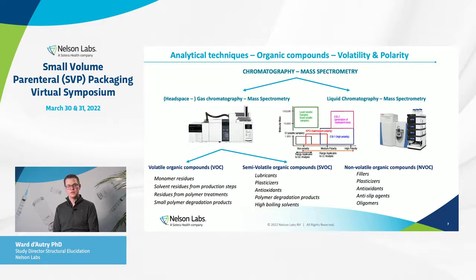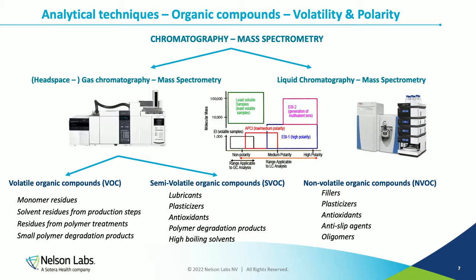For non-volatile organic compounds we use liquid chromatography mass spectrometry (LC-MS). Non-volatile compounds are typically larger or more polar — such as fillers, larger plasticizers, and antioxidants. For LC-MS you can have multiple modes of ionization: APCI covers more semi-polar to non-polar compounds, while ESI is more suited for polar compounds. The two techniques are complementary and can be used together.